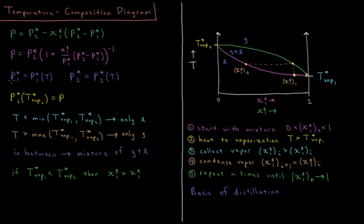We also know that vapor pressures of liquids vary with temperature, because the boiling point of a liquid is where the vapor pressure equals the external pressure. So the vapor pressure of pure liquid 1 and the vapor pressure of pure liquid 2 vary with temperature, and the vapor pressure of a pure component i at the boiling point or the vaporization temperature of that pure component is equal to the external pressure at that point.